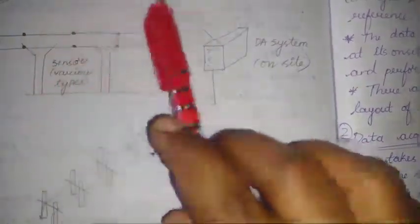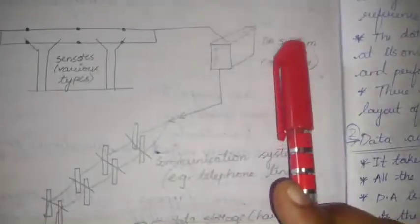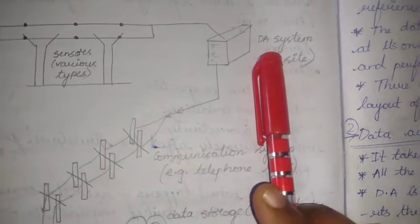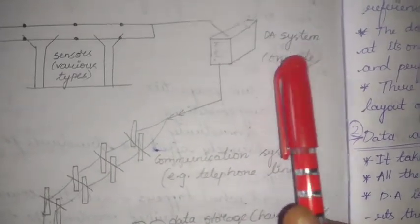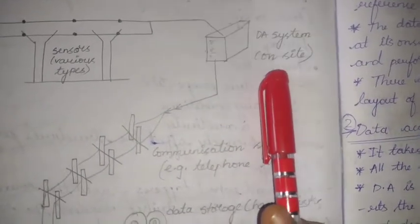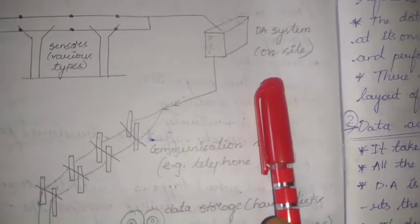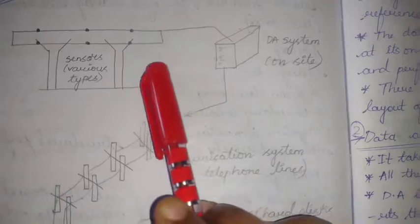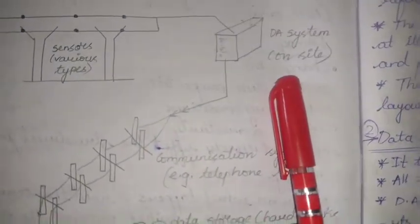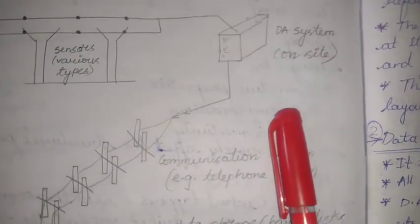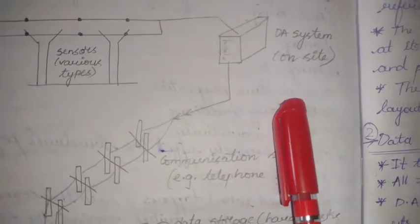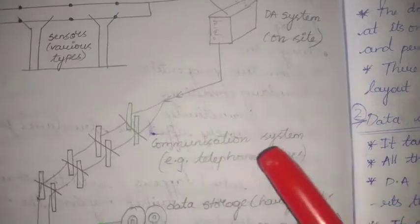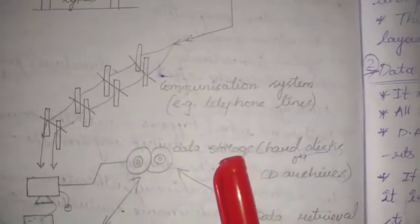Next we have the data acquisition system — it takes all the information from the sensors. All sensors present are connected to the data acquisition system. This is the process of sampling signals that converts the resulting samples into digital numerical values. Whatever data is collected as signals is converted into numerical terms. Depending on the data acquisition system used, it handles wired or wireless transmission and transfers the data to the communication systems.